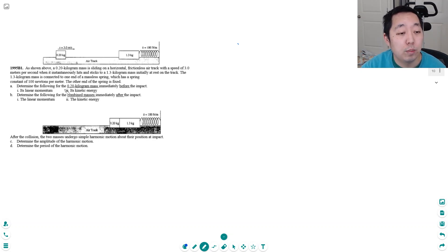Determine the following for the 0.2 kilogram mass immediately before impact: its linear momentum and kinetic energy. So before impact, they're setting you up with what's happening. Initially this has some energy and momentum, this thing has no energy, no momentum, it's relaxed.